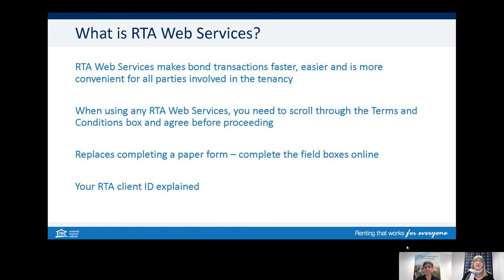Knowing your RTA client ID number will be important. For agents, your office will be issued one. For landlords and tenants, once you have a bond with the RTA, you will be given an RTA client ID number. Client ID numbers are separate to bond numbers. Your RTA client ID number is unique to you or your office, whereas the bond number will change each new property that is rented. So the bond number will change, but your client ID should stay the same.